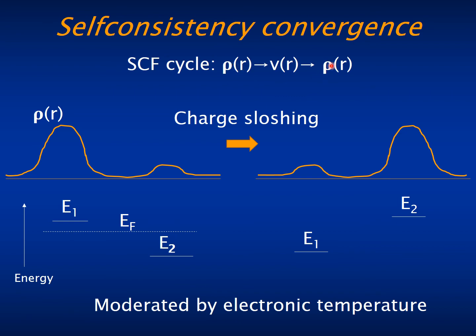The weight of the new density is referred to as the mixing weight, and typically it has to be only a few percent for the cycle to converge.